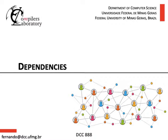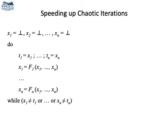In the last class, we talked about the chaotic iterations, methods to solve data flow equations. In this class, we will see how we can speed it up using some optimization techniques.